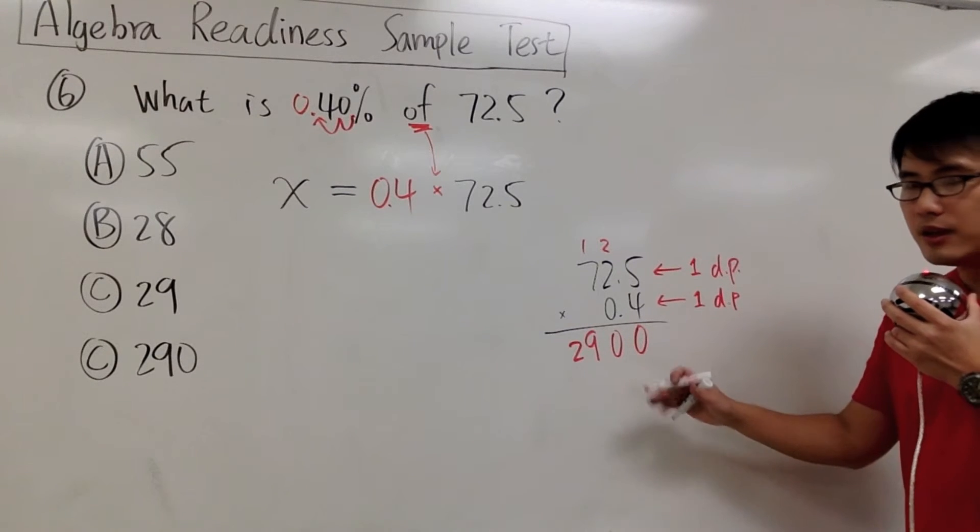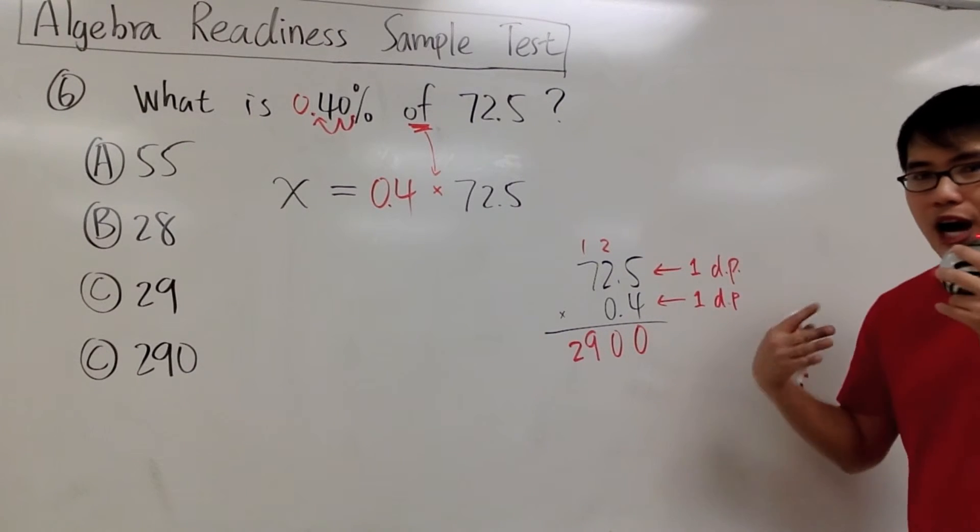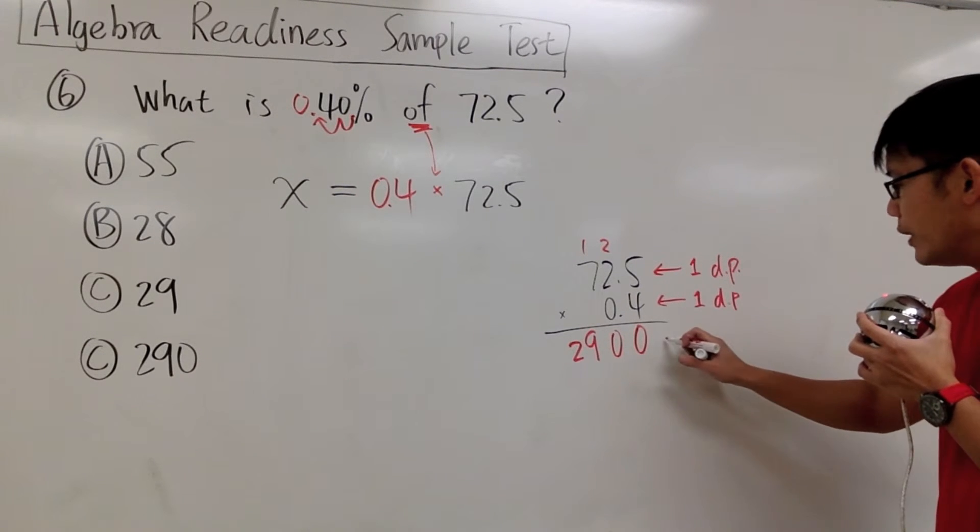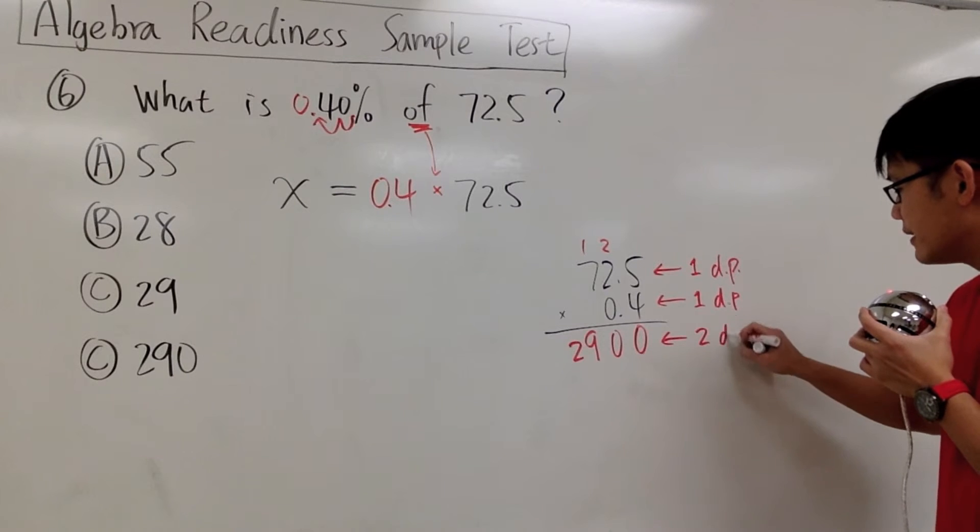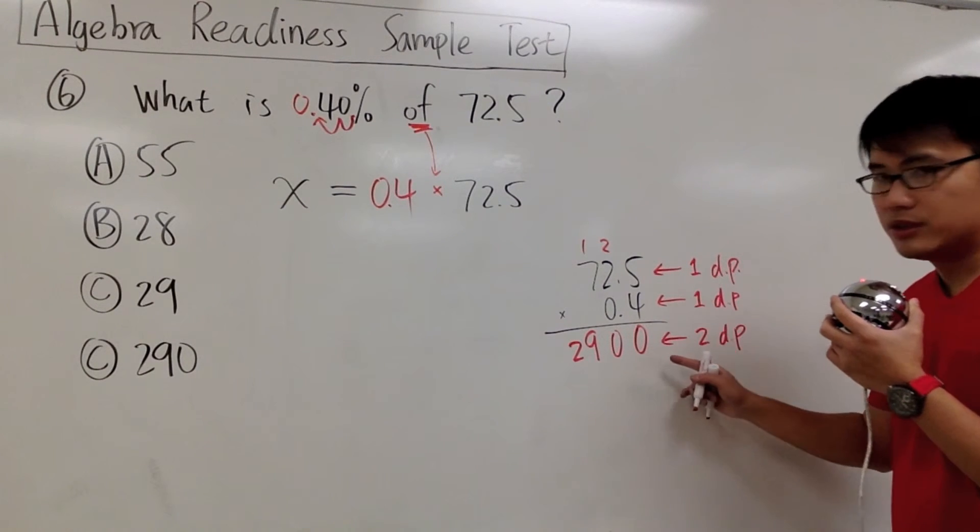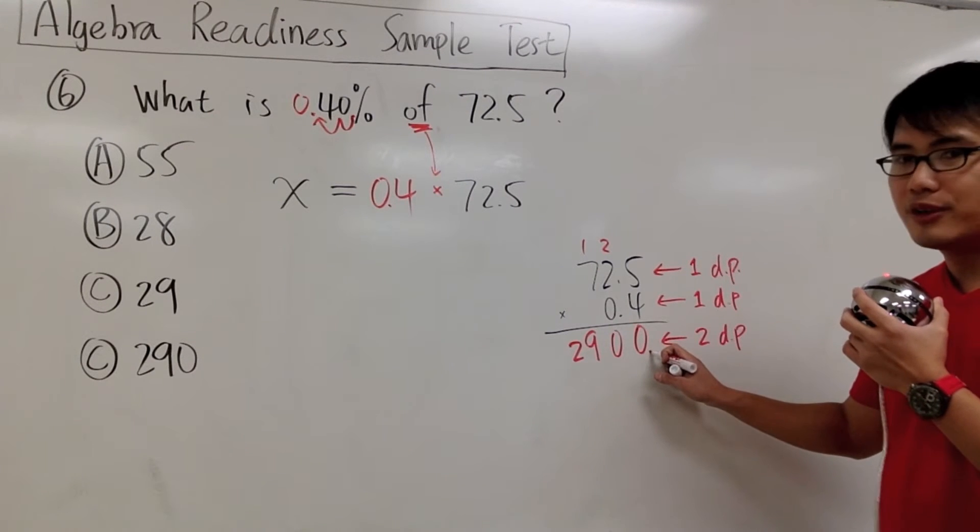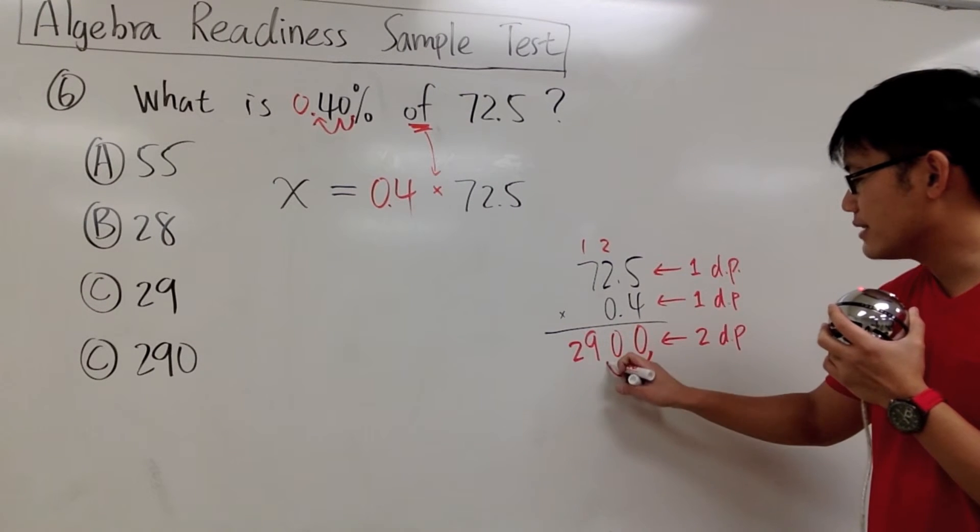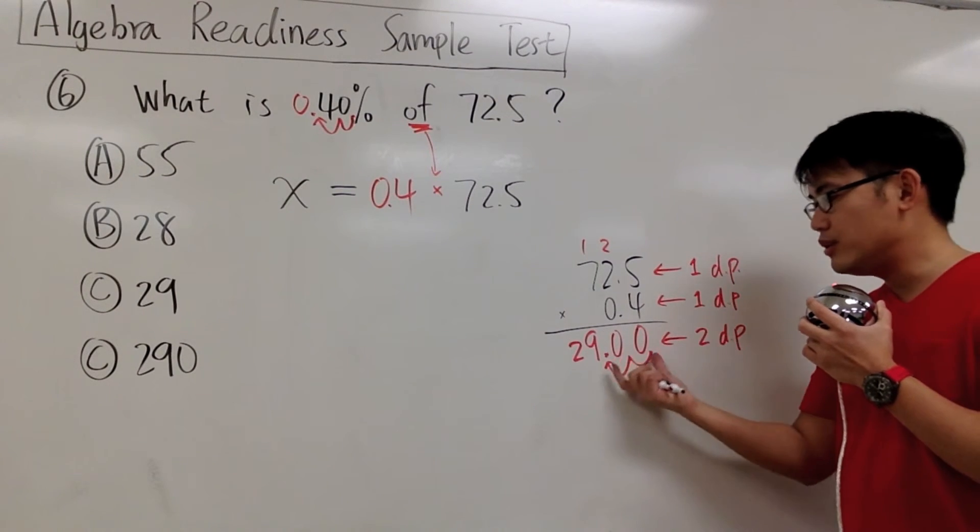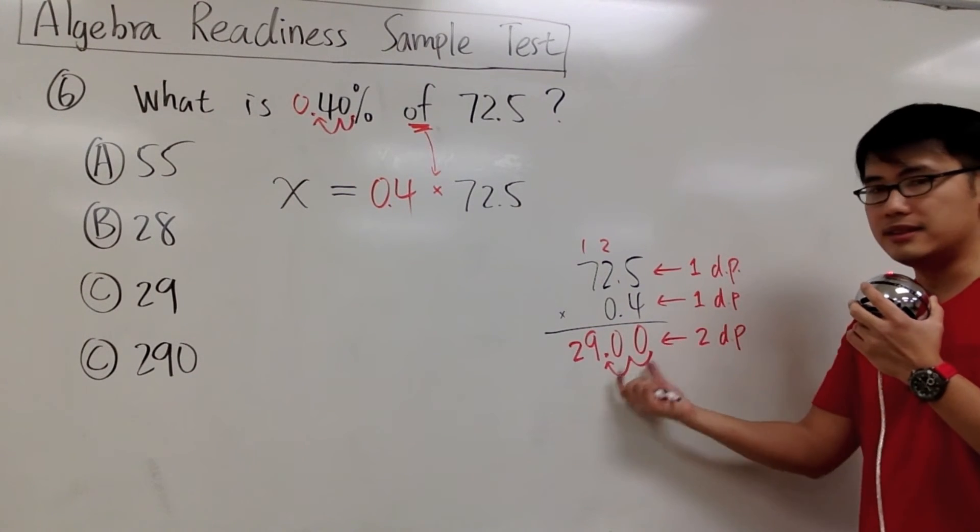For the final answer, we add up how many decimal places we have altogether. 1 plus 1, we need 2 decimal places. This is 2900, originally the decimal point should be right here, but I have to move once, twice to the left. I indicate the decimal point right here. So we have 2 decimal places,